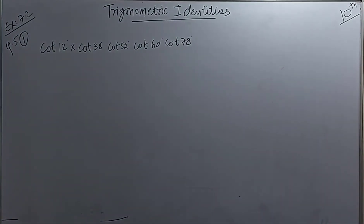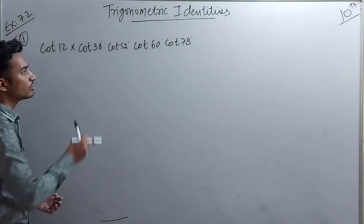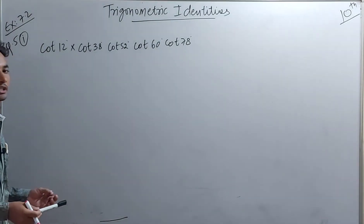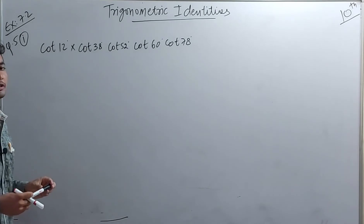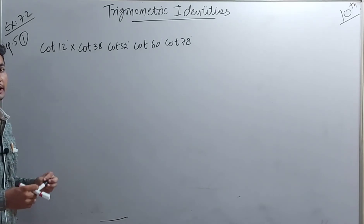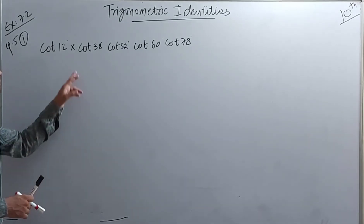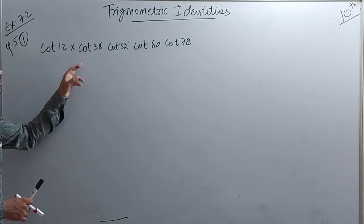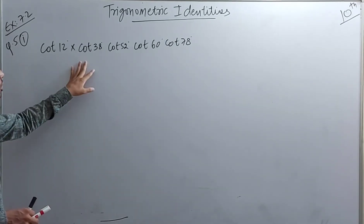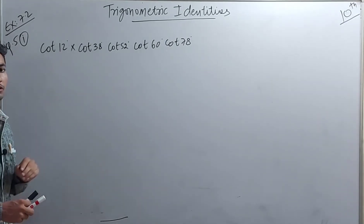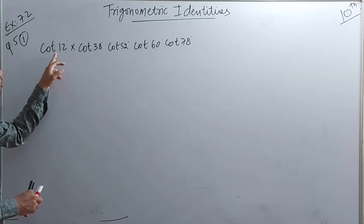How do we find the values? We have to establish a relationship between these values. Just like in the earlier question, we create a relation so that the terms can cancel out. Here we also set up such a relation.